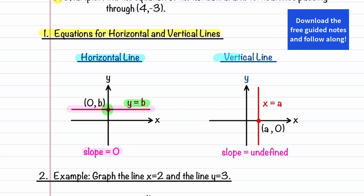Now let's talk about vertical lines. A vertical line looks like this, and it has a slope that's undefined. If we have a vertical line and it passes through a point (a, 0), then the equation of a vertical line is written as x is equal to a.